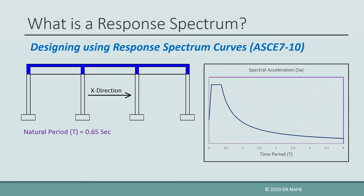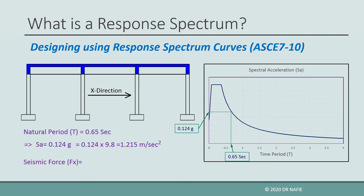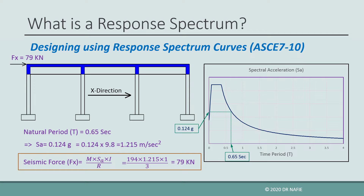First, we analyze the x-direction. The time period in the x-direction is calculated using a computer model and found to be 0.65 seconds. We use the response spectrum curve to find the corresponding spectral acceleration SA, which was found to be 0.124g, where g is the acceleration of gravity. To evaluate the earthquake force in the x-direction, we multiply SA by the mass M to find the elastic response, then divide by the factor R to convert it to the inelastic response, and finally multiply by the importance factor I. The final result was found to be 79 kilonewtons.